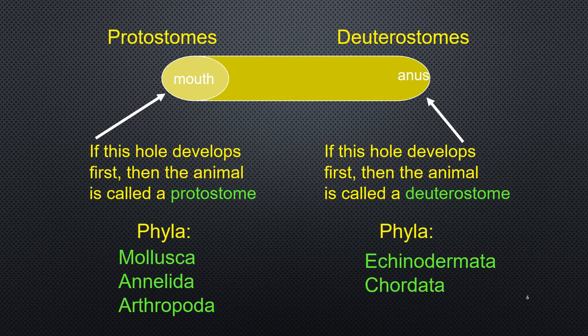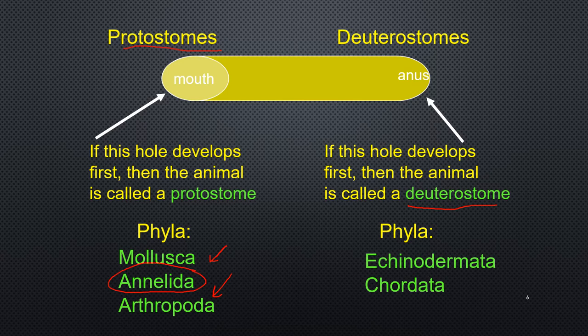A reminder about protostomes: the mouth develops first from the blastopore. We've already talked about Annelida — those were our segmented worms, and they were protostomes. Today we continue with Mollusca, and later we'll carry on with arthropods. Those are all protostomes. Later we'll talk about the deuterostomes, which are more highly developed — that's where the anus develops first from the blastopore — including echinoderms and chordates.